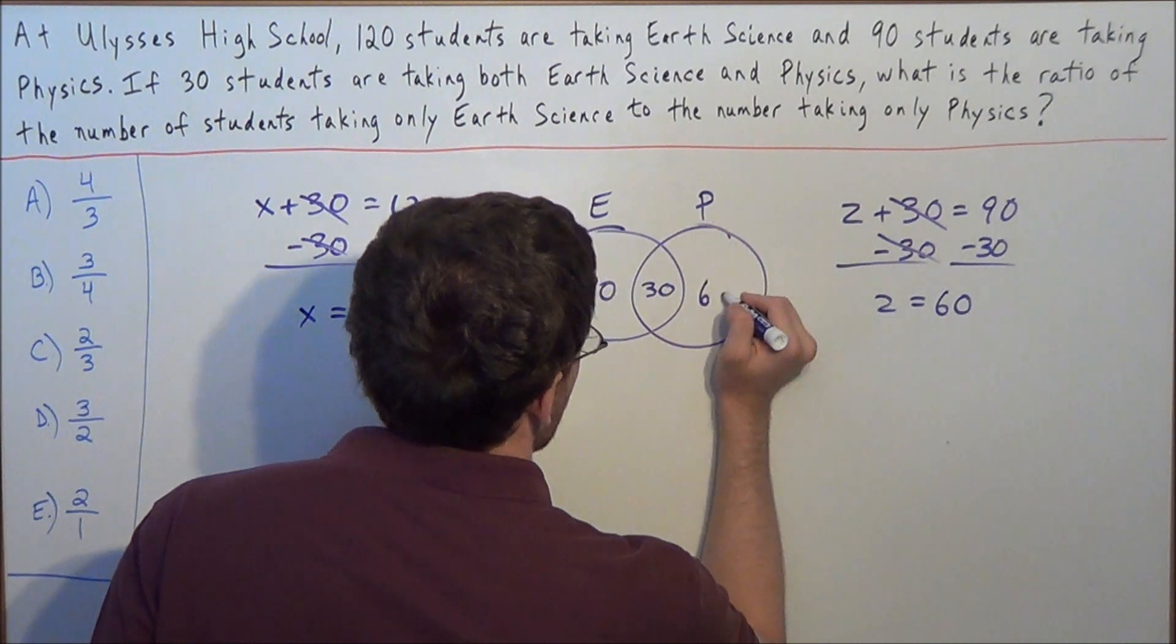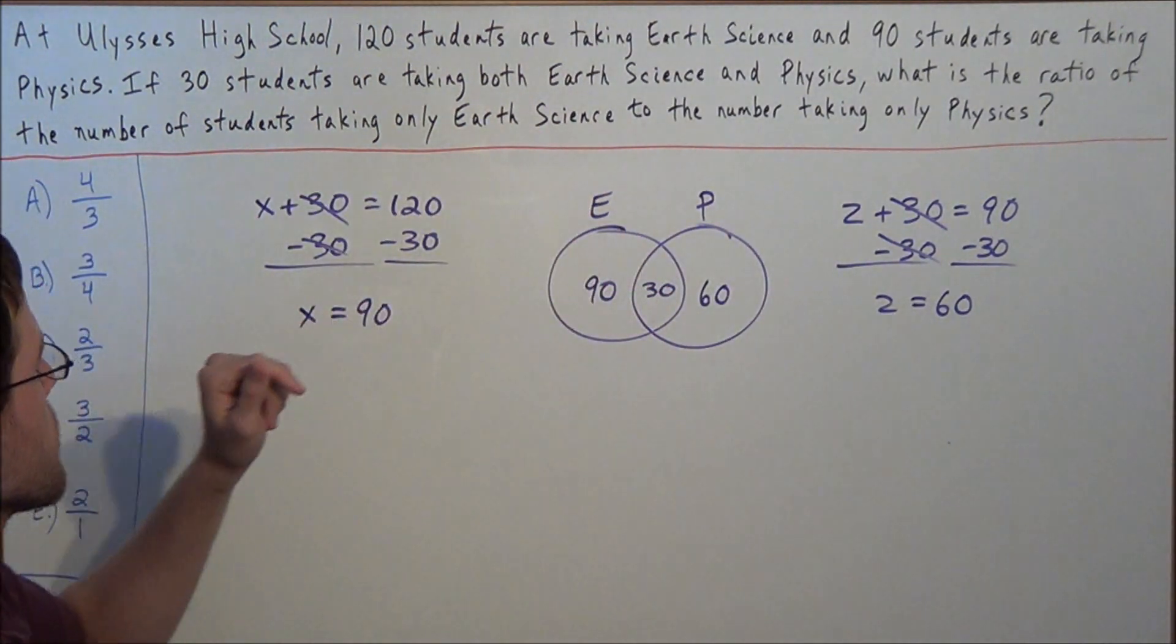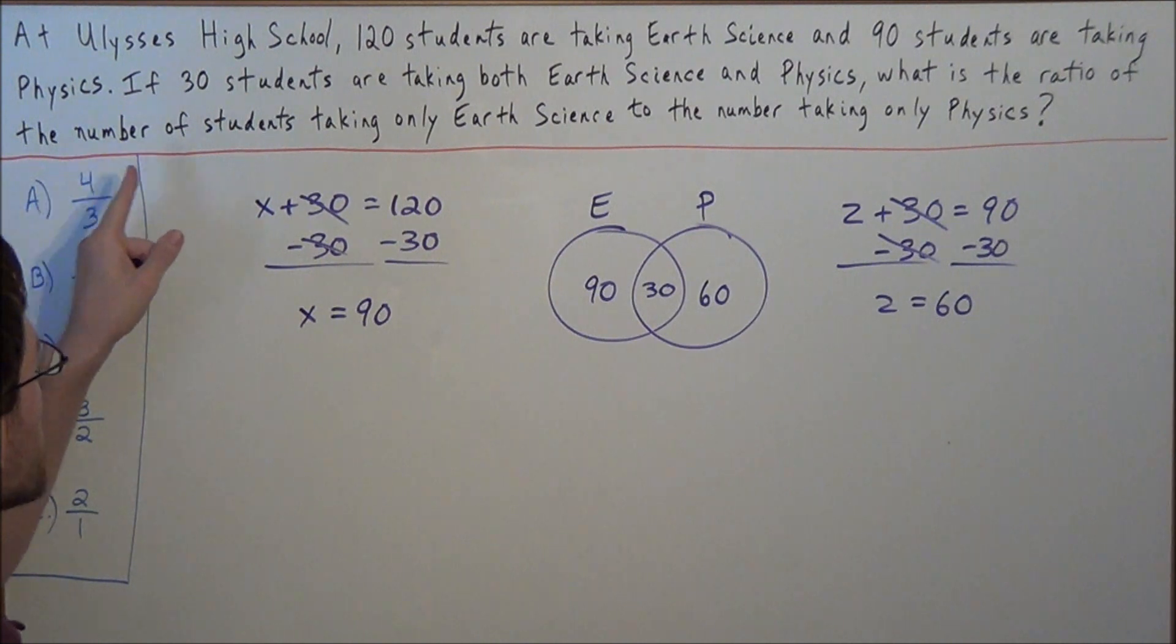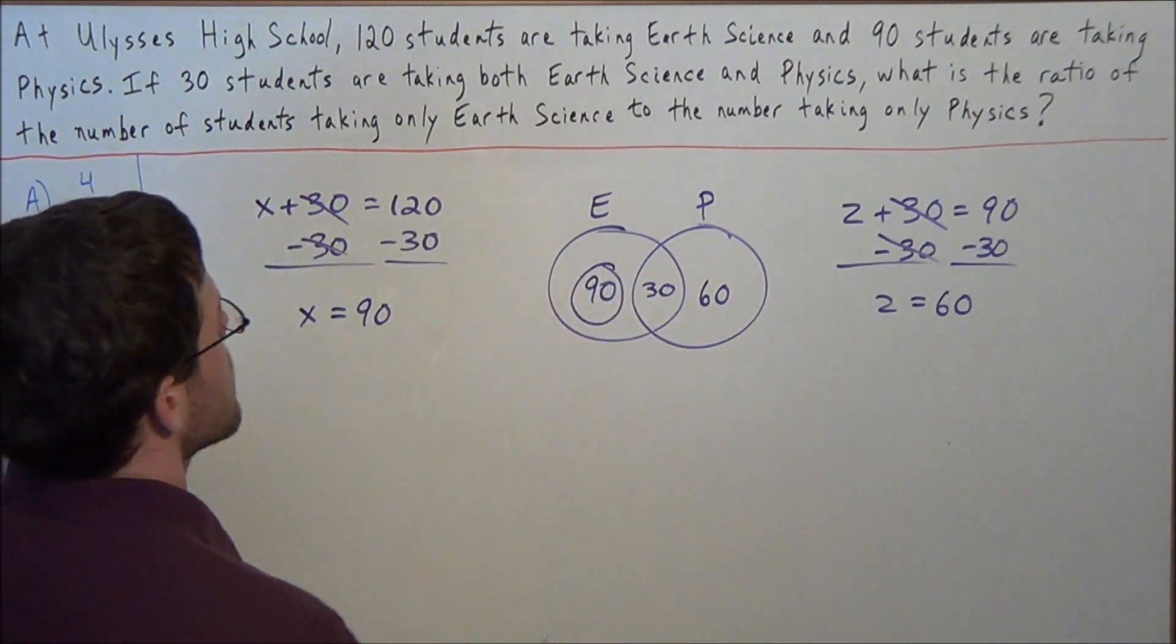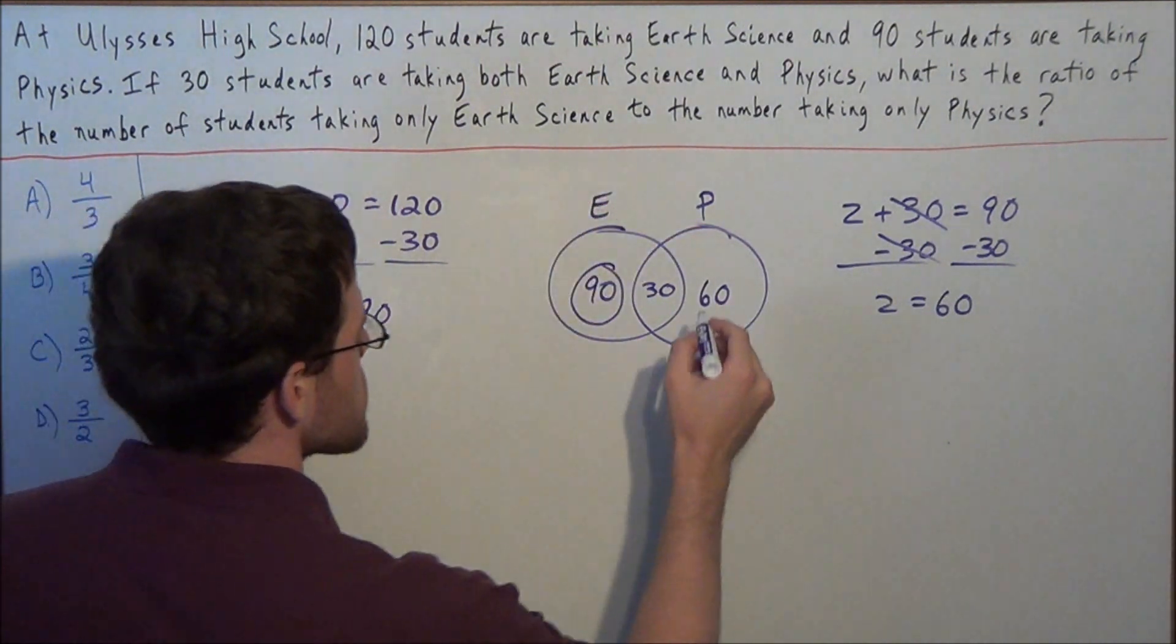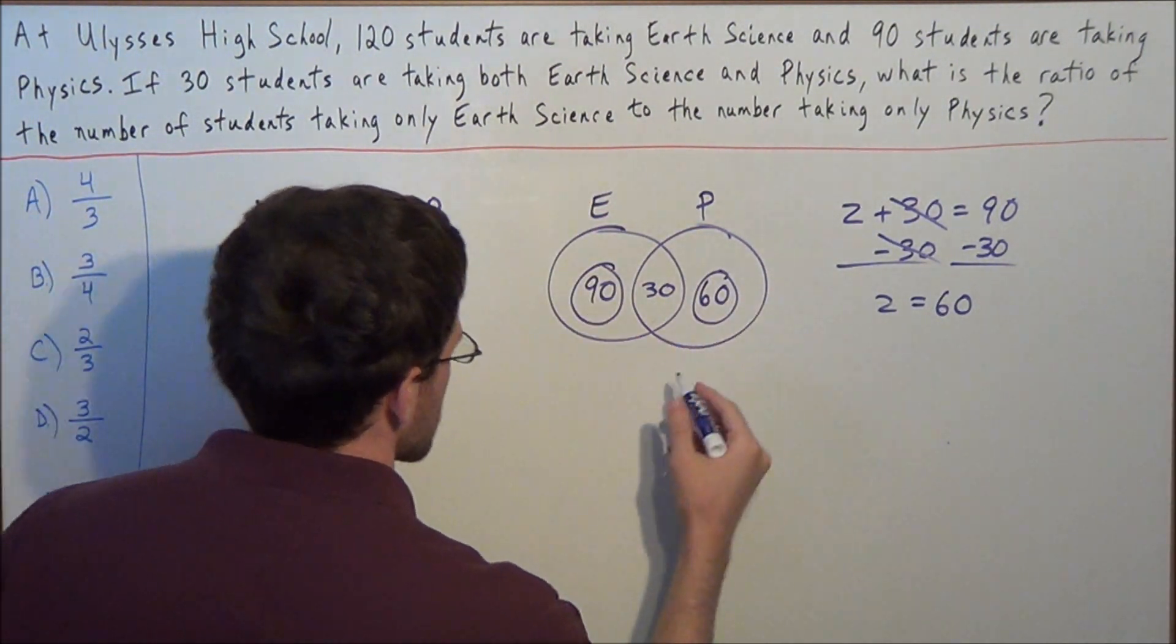So now we're almost done. We have to read the last part of this question. What is the ratio of the number of students taking only Earth Science to the number taking only Physics? So we're comparing 90 to 60.